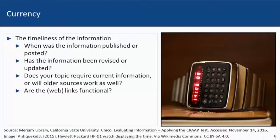The first criteria is currency. It refers to the timeliness of information — the date the article was posted or when a website was last updated. Another element to consider is whether or not your topic requires current information.